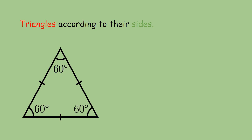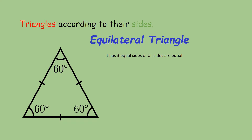This picture is an example of an equilateral triangle. How can we say that? It is because it has three equal sides, or all sides are equal. Therefore, triangle ABC is an equilateral triangle.